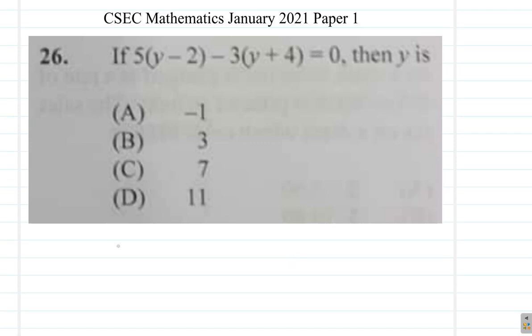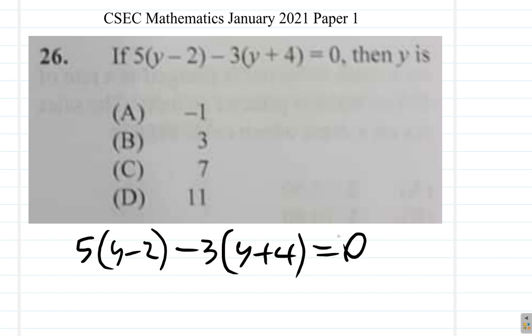If 5, let me write it again here, 5 times y minus 2, minus 3 times y plus 4, equals 0, then y is